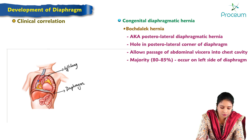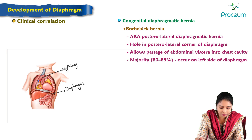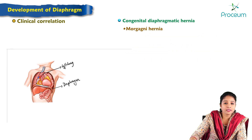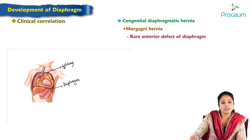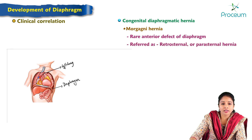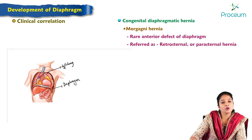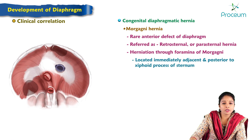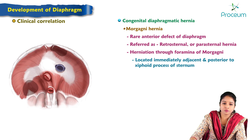In this image, we can see the demonstration of Bochdalek hernia where intestinal contents are protruded into the left side of the thoracic cavity, hindering development of the left lung. The next type is Morgagni hernia, which is rare. It occurs due to an anterior defect of the diaphragm and is also referred to as retrosternal or parasternal hernia. It is characterized by herniation through the foramen of Morgagni, located immediately adjacent to or posterior to the xiphoid process of the sternum.